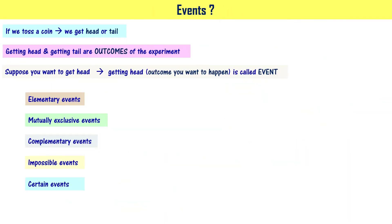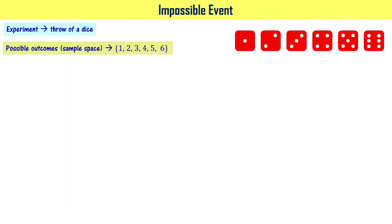Next: impossible events. Let us throw a dice. When you throw a dice, the possible outcomes are 1, 2, 3, 4, 5, 6 — 6 total outcomes. For example, event E is getting a number greater than 6. A dice has only 6 faces with numbers 1 to 6, so getting a number greater than 6 is not possible.